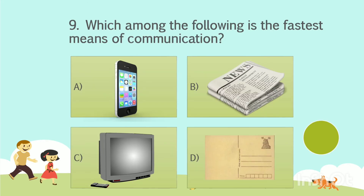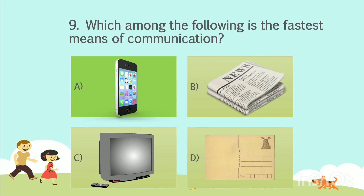Question number 9. Which among the following is the fastest means of communication? Option A: Mobile. Option B: Newspaper. Option C: Television. Option D: Postcard. Your time starts now. The answer is Option A, Mobile.